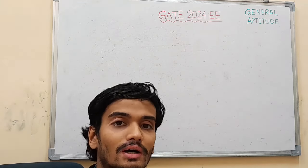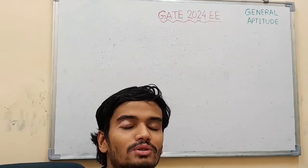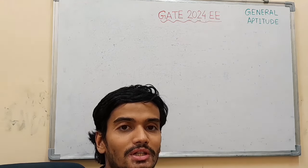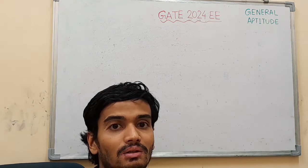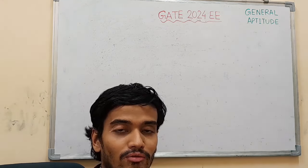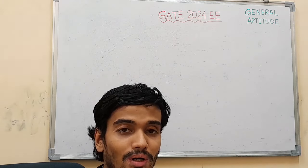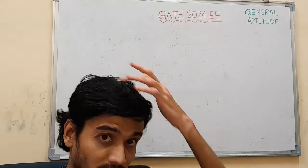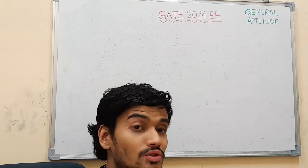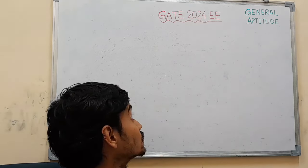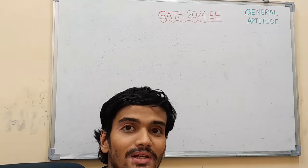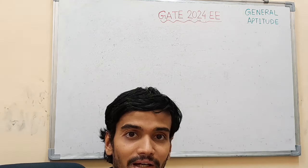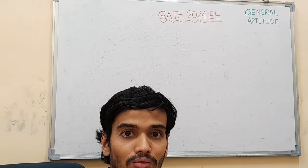As you all know, 10 questions come from General Aptitude each year in the aptitude section of 15 marks — 5 one-mark questions and 5 two-mark questions. In this video I am going to give you detailed solutions for the questions, so please watch the video carefully till the end without skipping.